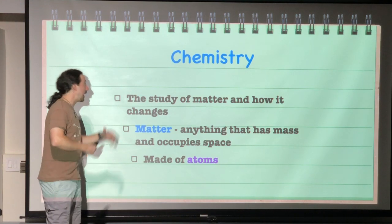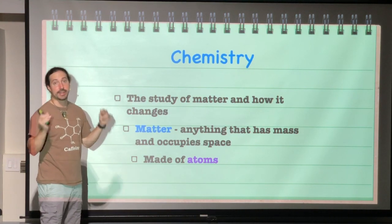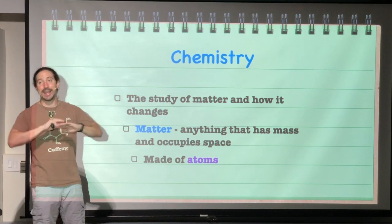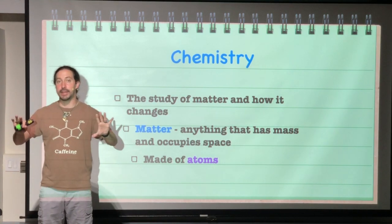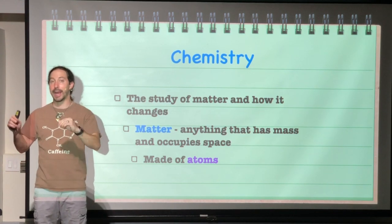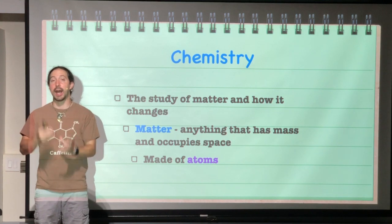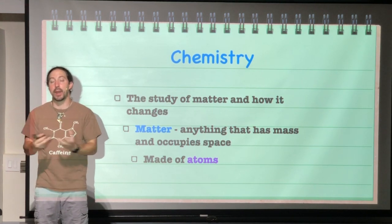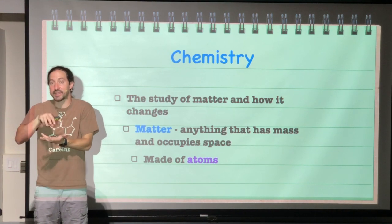First off, we have to understand what chemistry studies and that is called matter. So matter is anything that occupies space. It doesn't matter if it's a solid, a liquid or a gas. All of those things occupy space. They take up a specific amount of space. They have mass as well.